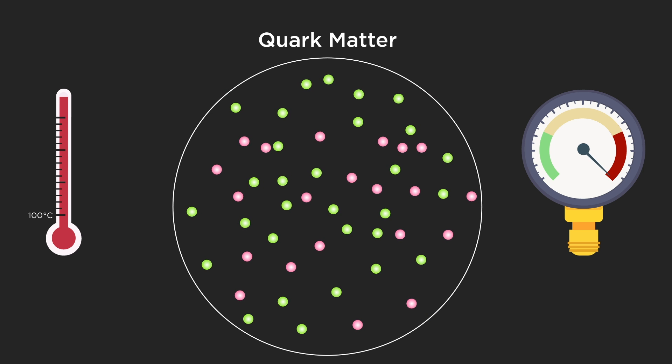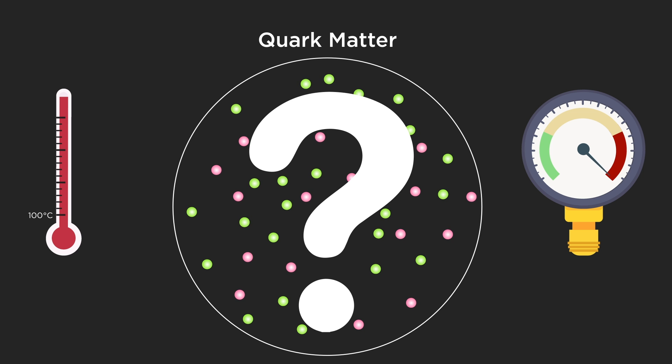Further compression breaks nuclei up into their constituent quarks. This is known as Mott dissociation. But where are conditions extreme enough for this to happen?